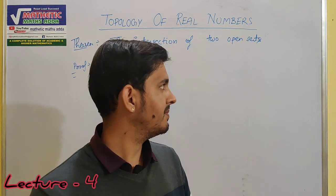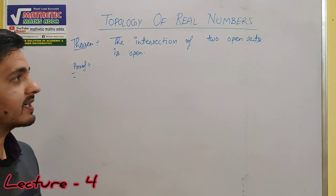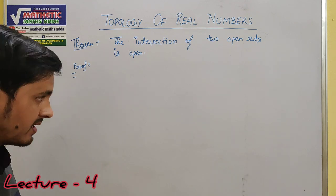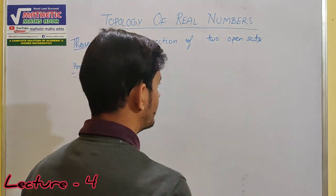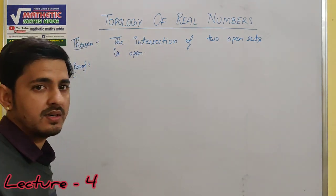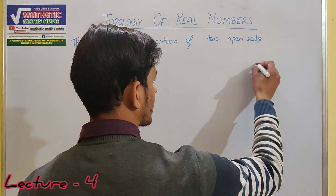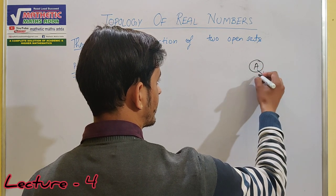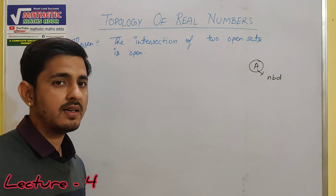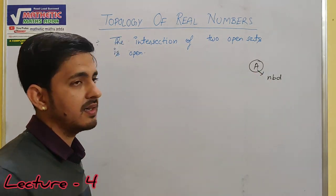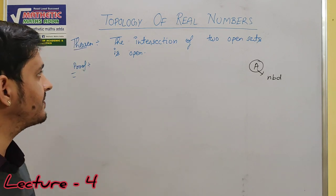इस video में हम यह proof करेंगे कि दो open sets का जो intersection होता है वो भी open set होता है। Open set क्या था? अगर एक कोई भी set लिया और उसके हर एक point का neighborhood है — इसके अंदर जितने point आ रहे हैं उनके लिए neighborhood है — तो उस set को हम open set बोलते हैं। Previous videos के links आप description में जाकर देख सकते हैं।